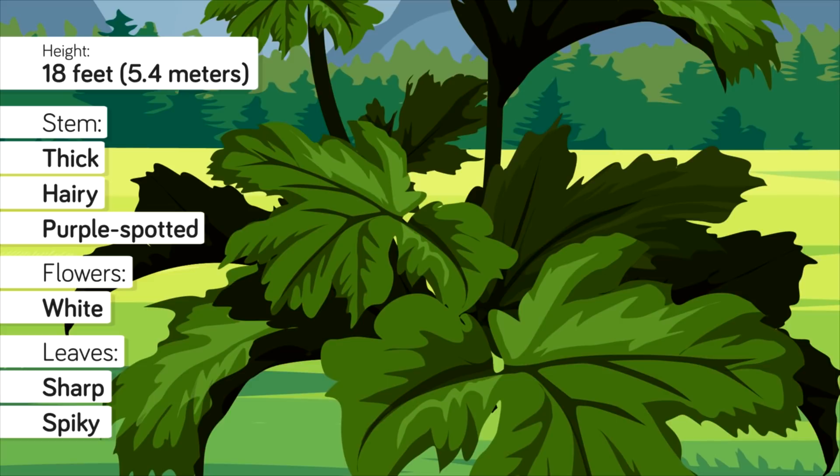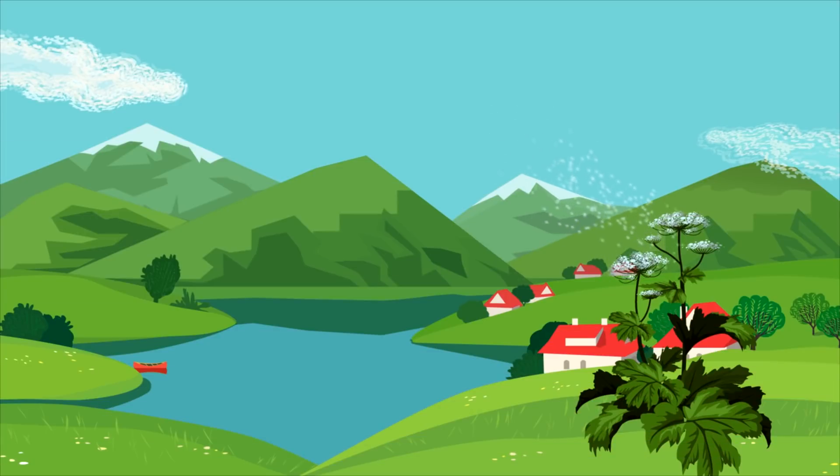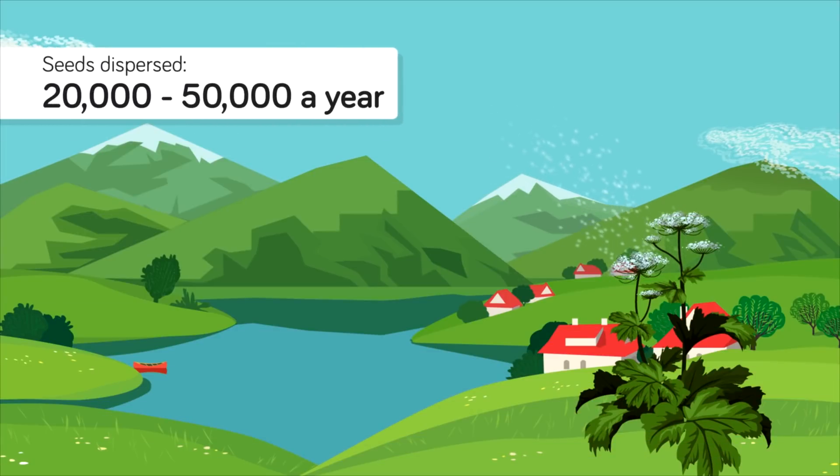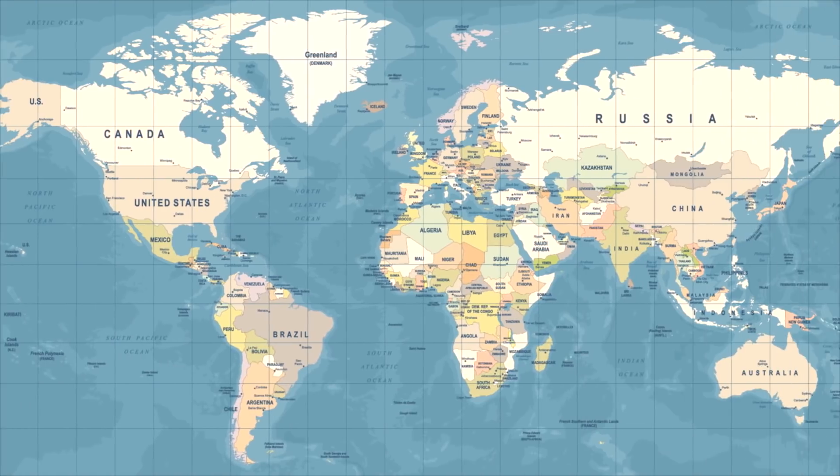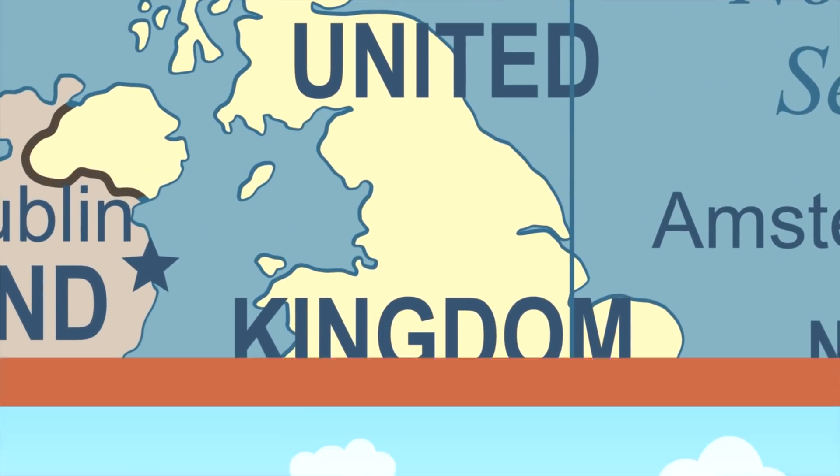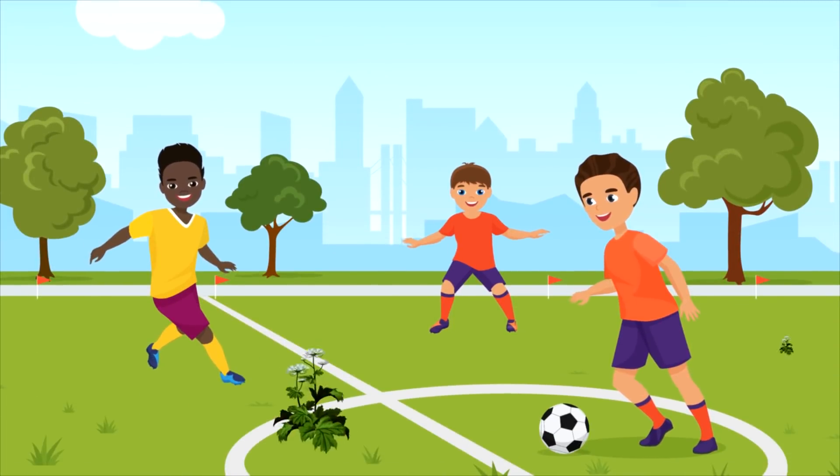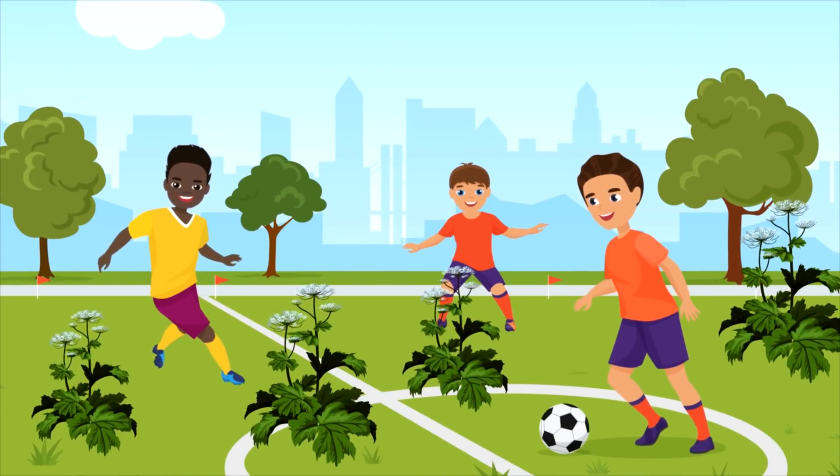You see, this thing spreads like wildfire as it produces between 20,000 and 50,000 seeds a year that fall as far as 30 feet from the plant and can be taken farther away by wind or water. Given some time, your favorite public park could become infested with these horrible plants, and as happened in Manchester, UK, a fun day out for the kids can turn into a nightmare.